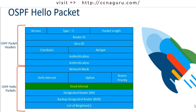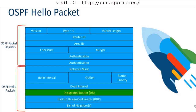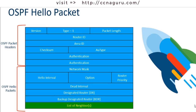The Dead Interval is the time in seconds a router will wait to hear from a neighbor before declaring that neighbor dead. By default, the dead interval is 4 times the Hello interval — so if Hello is 10 seconds, the dead interval is 40 seconds. The Designated Router field contains the router ID of the DR, and the BDR field contains the router ID of the BDR. Finally, the List of Neighbors field identifies the router IDs of all adjacent OSPF routers.